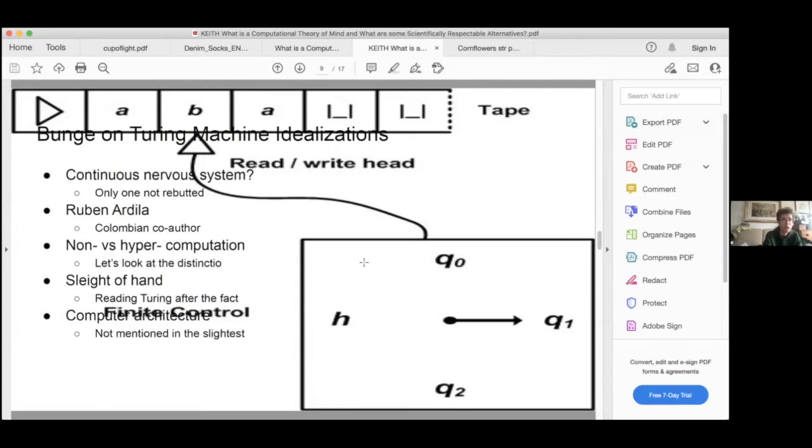And if you go and read whether or not this objection makes any difference to people actually studying computation, as I did after the fact, Turing addresses it as it happens. And the computer architecture literature, which is where you think you'd find this addressed, it's not mentioned in the slightest. No one seems to care at all that there's an idealization made here that may not be suitable because it applies there too. There are continuous voltages and so on in real, in what are uncontentious computers.